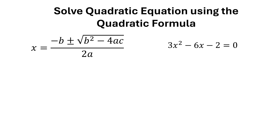For this quadratic equation, I'm going to find the solutions using the quadratic formula, which is negative b plus or minus square root of b squared minus 4 times a times c, all over 2a.